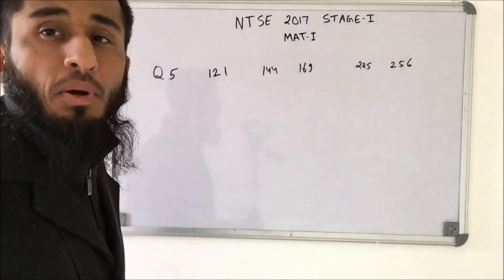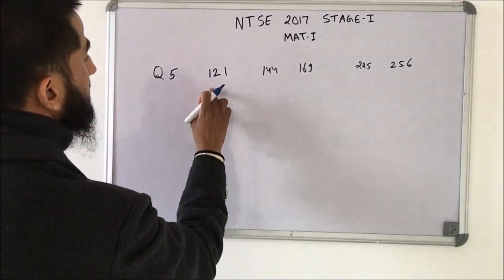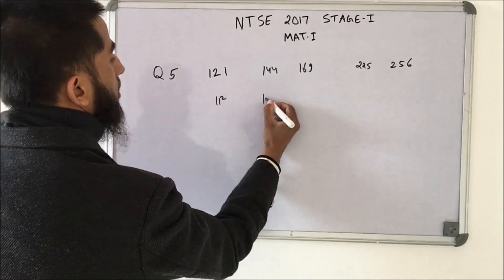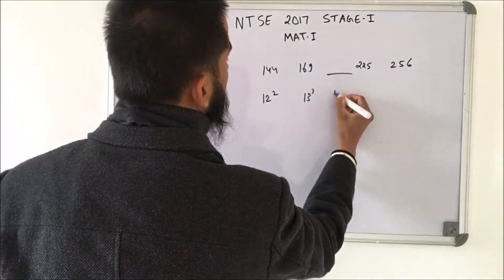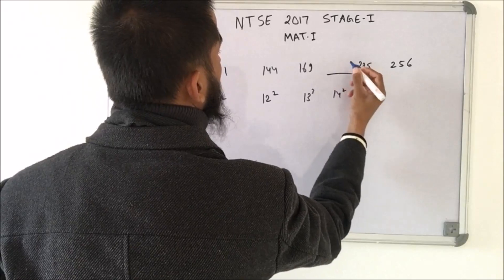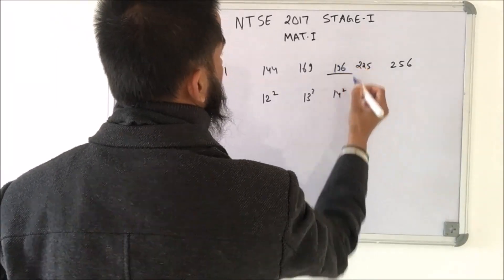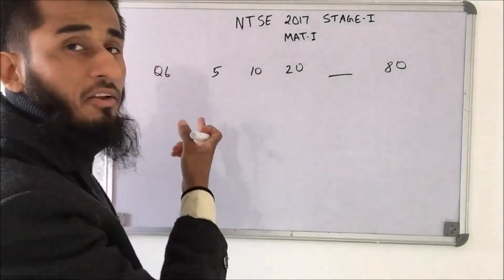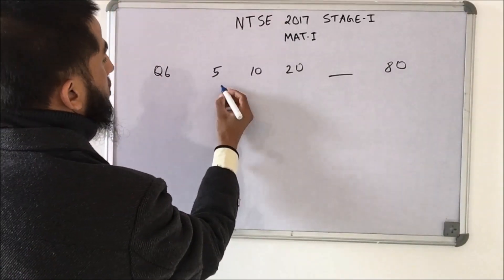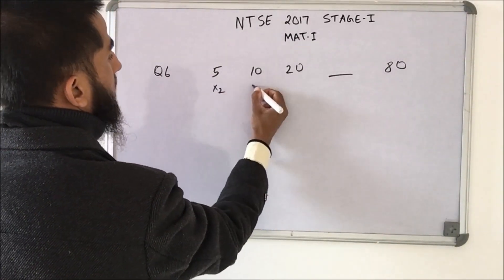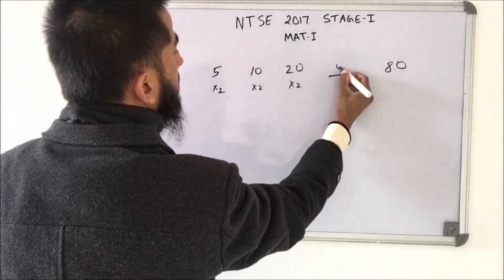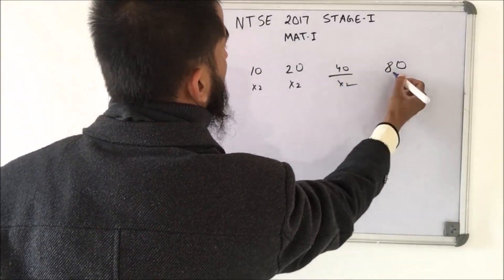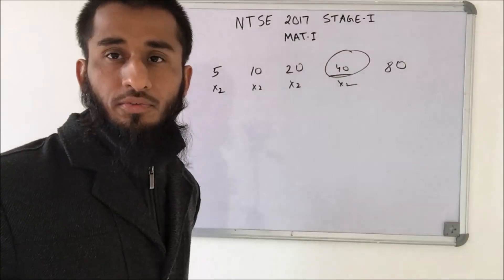This series is: square of 11, square of 12, square of 13. So the missing term should be square of 14, which gives 196. For the next pattern: 5 × 2 = 10, 10 × 2 = 20, so 20 × 2 = 40, and 40 × 2 = 80. So 40 is the correct answer.